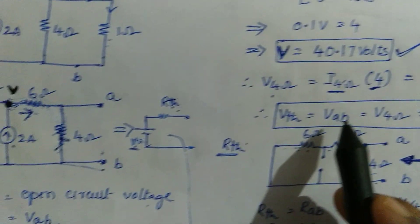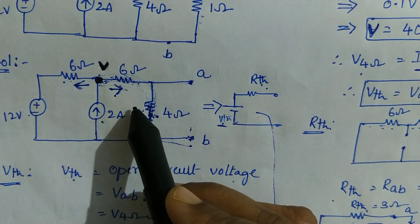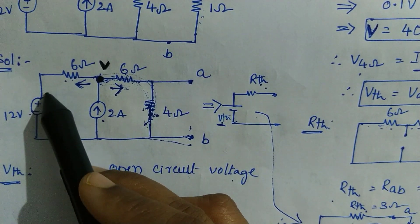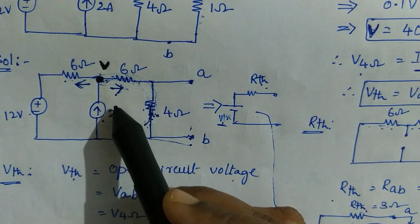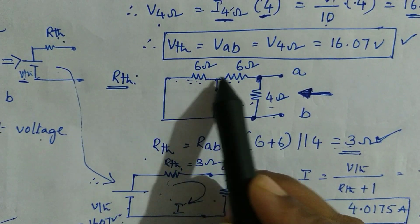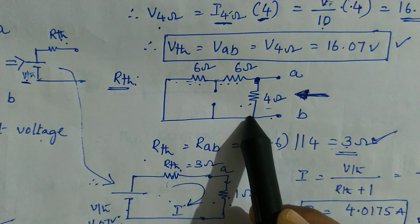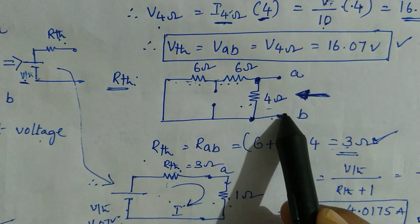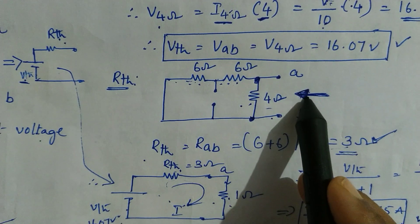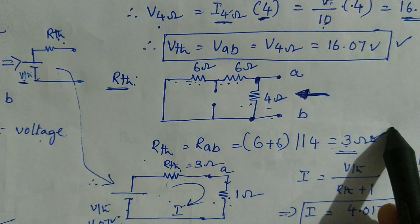Now it is time to calculate R Thevenin. From this circuit only, we should not consider any sources. If the voltage source is zero, it should be replaced by a short circuit. If the current source becomes zero, it will be replaced by an open circuit. If we do so, the circuit shows these two resistors connected in series, and this combination is in parallel with 4 ohm. That is the resistance across AB, which is R Thevenin. We have calculated it as 3 ohms.